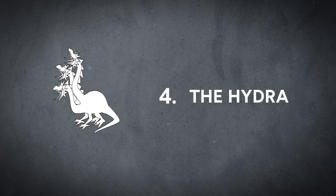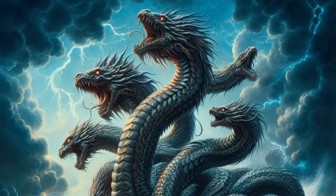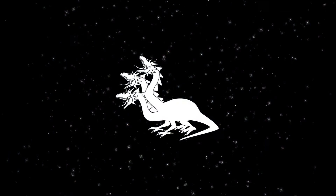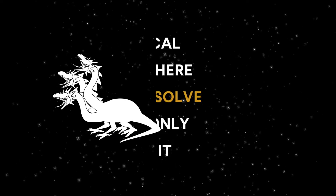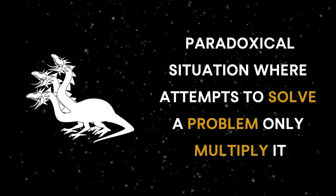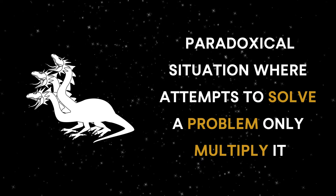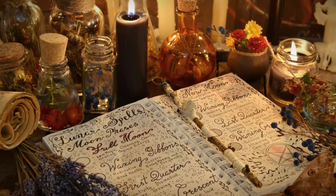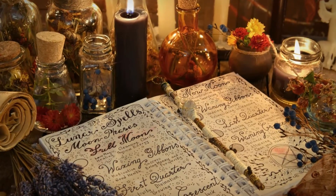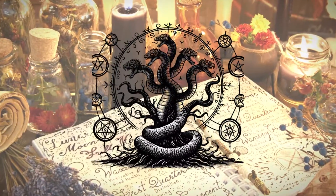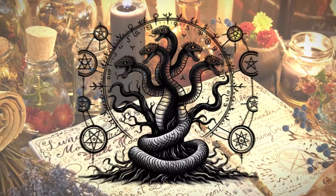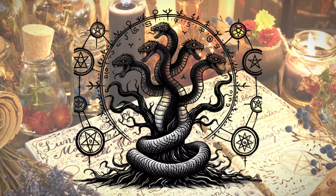In Greek mythology, the Hydra was a serpent-like creature that grew two heads for every one that was cut off, symbolizing a paradoxical situation where attempts to solve a problem only multiply it. In esoteric symbolism, the Hydra represents a complex problem that multiplies when confronted.